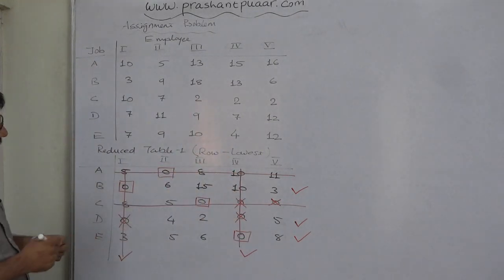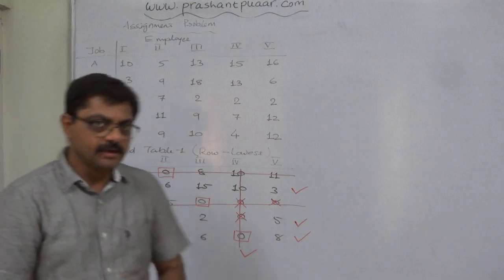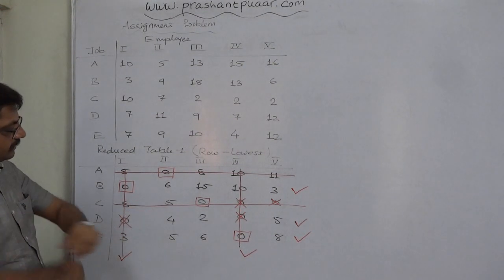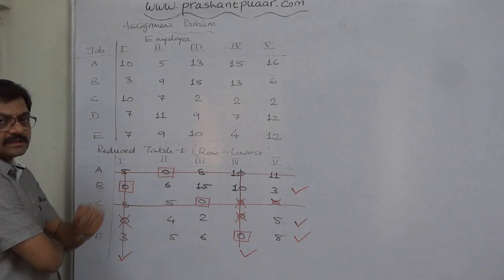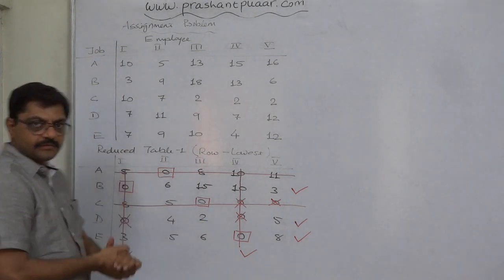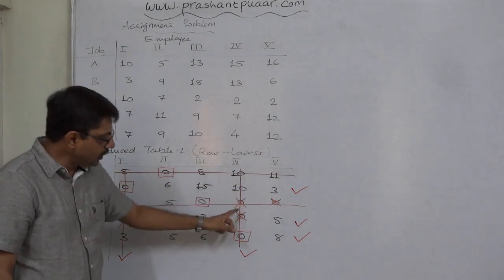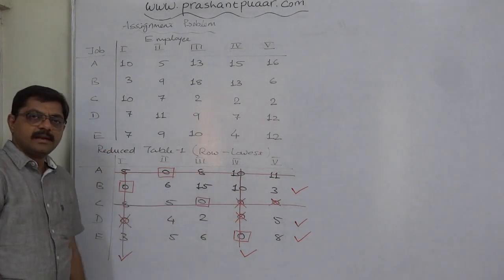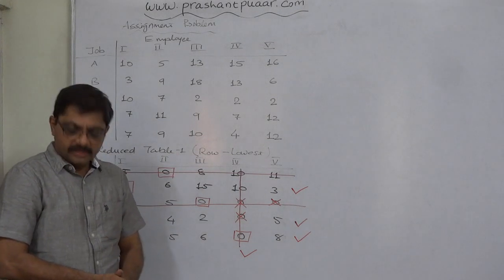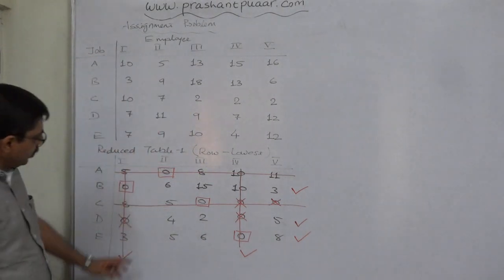We have four lines because we had only four assignments — the number of lines always equals the number of assignments. Now all values in the table can be classified into three categories: open values not under any line, values under a line but not at an intersection, and values at the intersection of two lines.